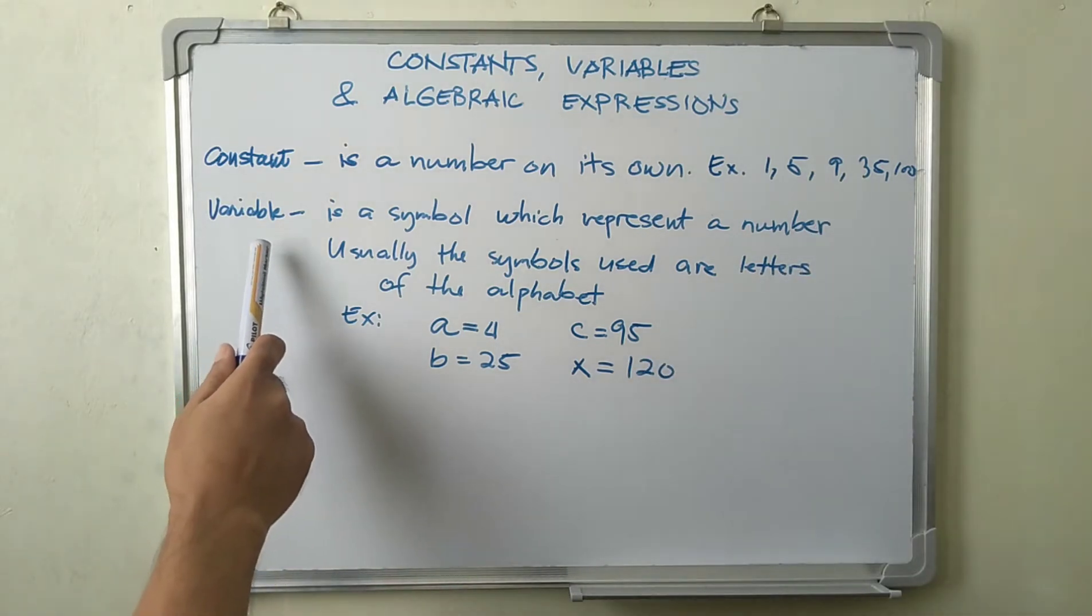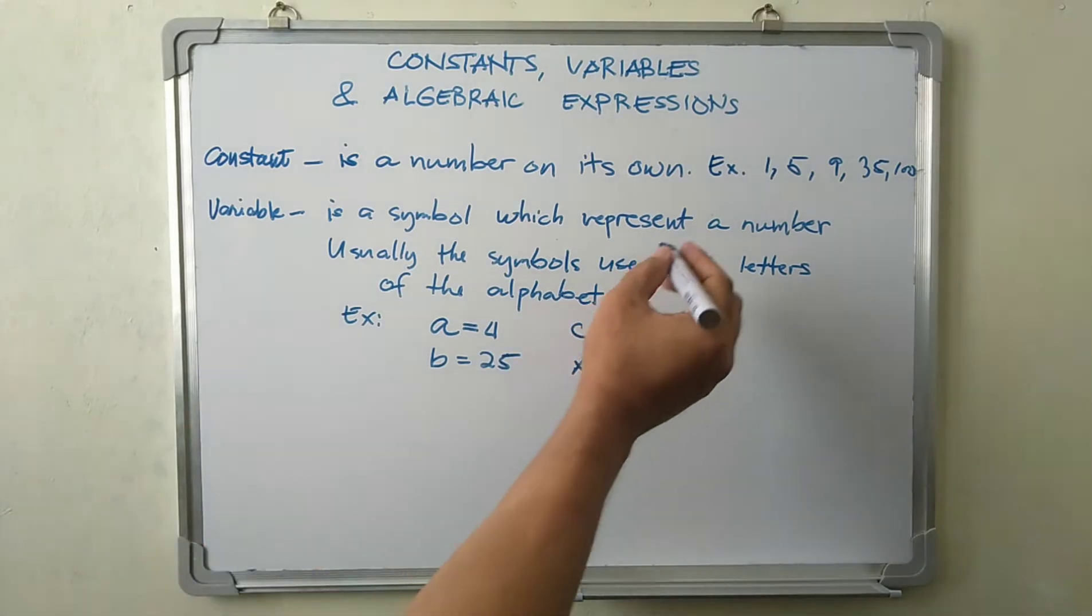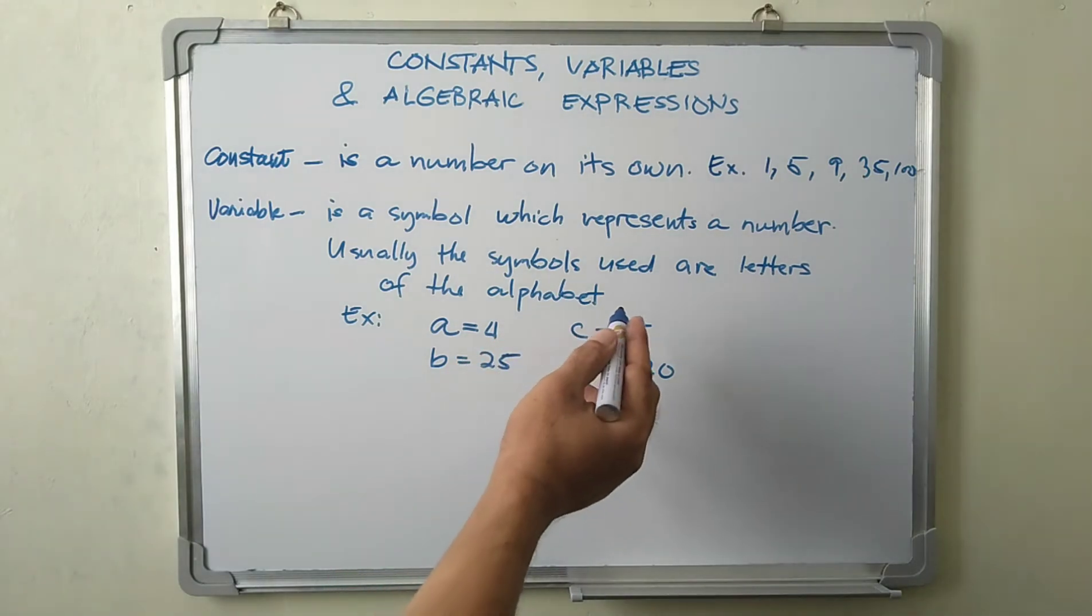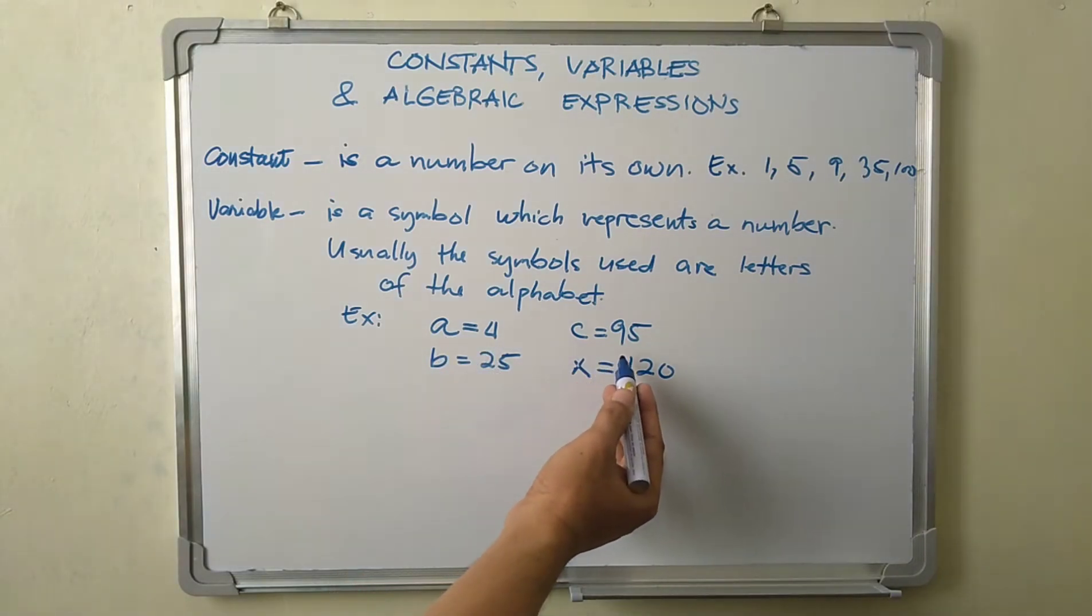Next is variable. It is a symbol which represents a number. Usually the symbols used here are letters of the alphabet. For example, a equals 4, b equals 25, c equals 95 or x equals 120.